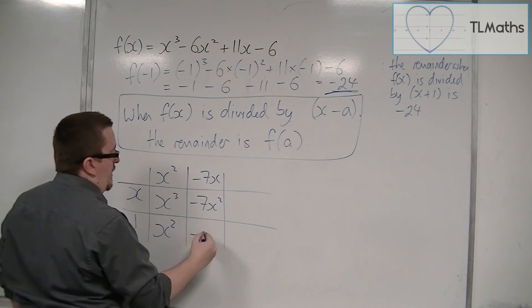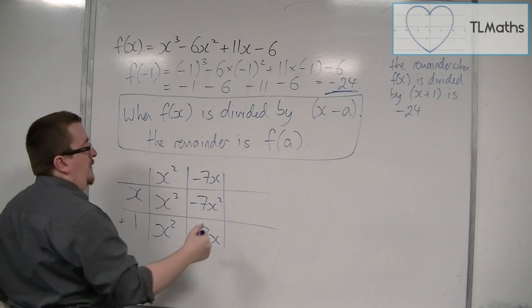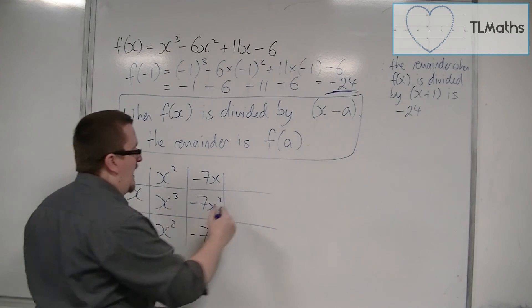-7x times 1 is -7x. I don't want -7x, I want 11x, so I've got to add on 18x. x into that goes 18.